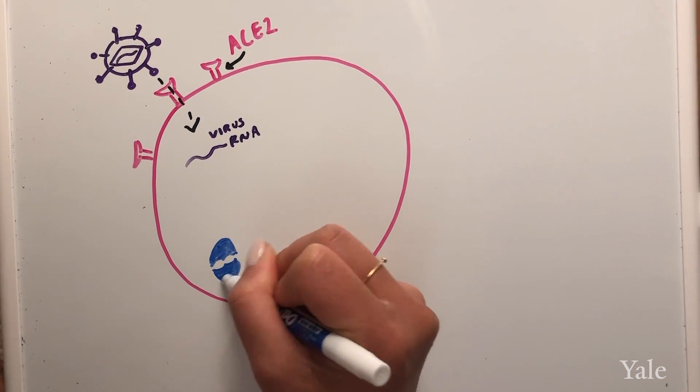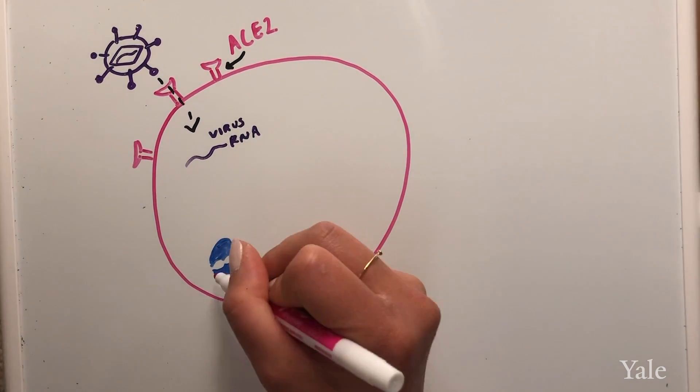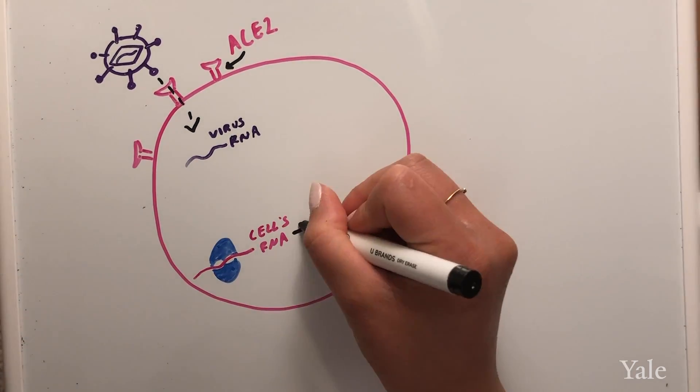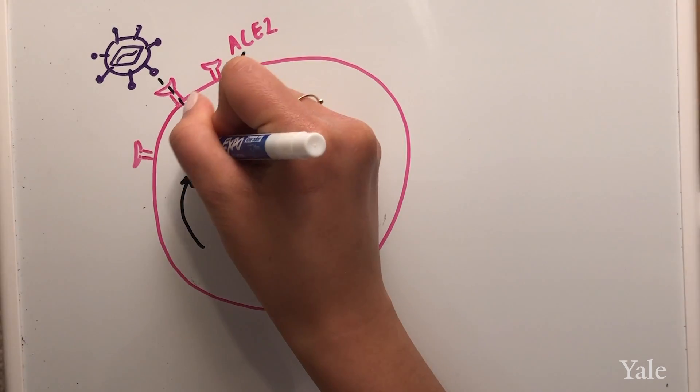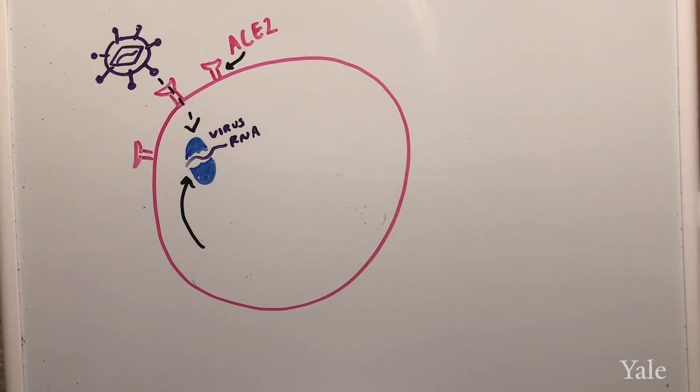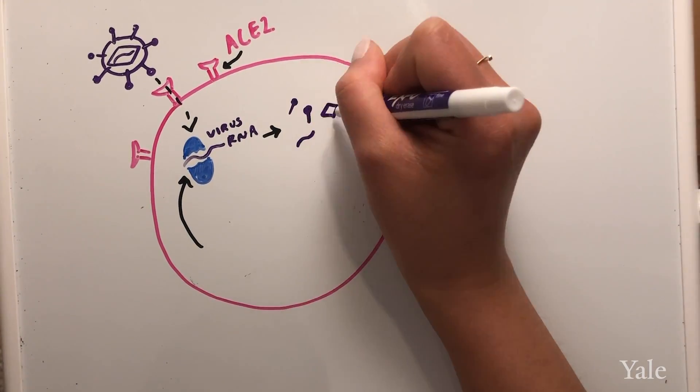The cell has its own replication machinery, like a ribosome, for making its own RNA into protein. But now the virus can hijack the cell's ribosome and turn its own viral RNA into protein that makes up the components necessary for a new virus.